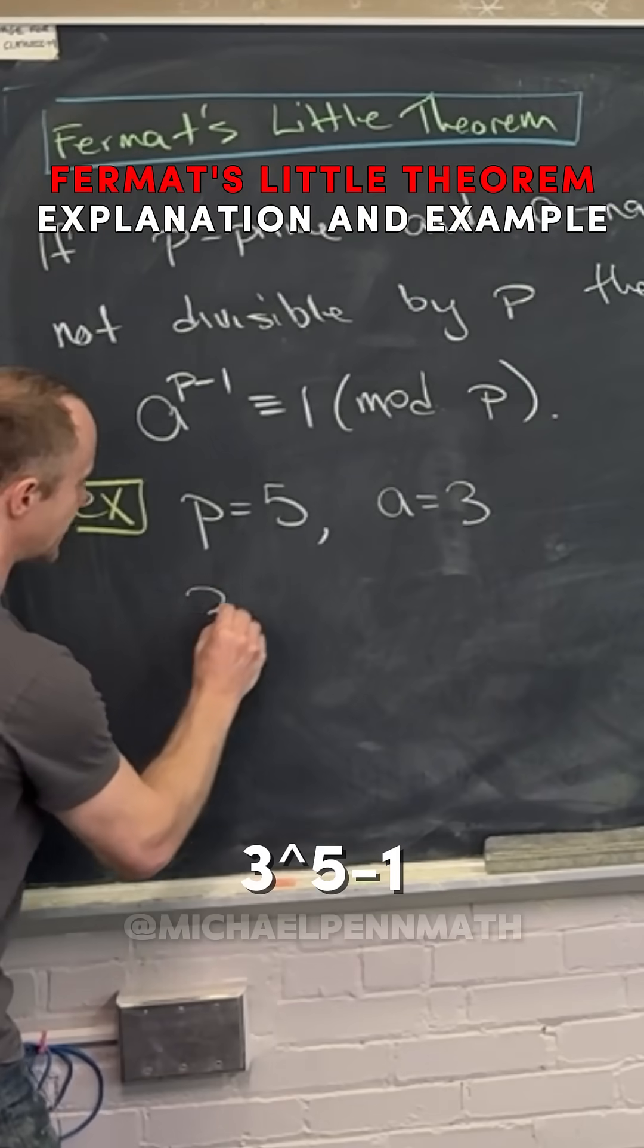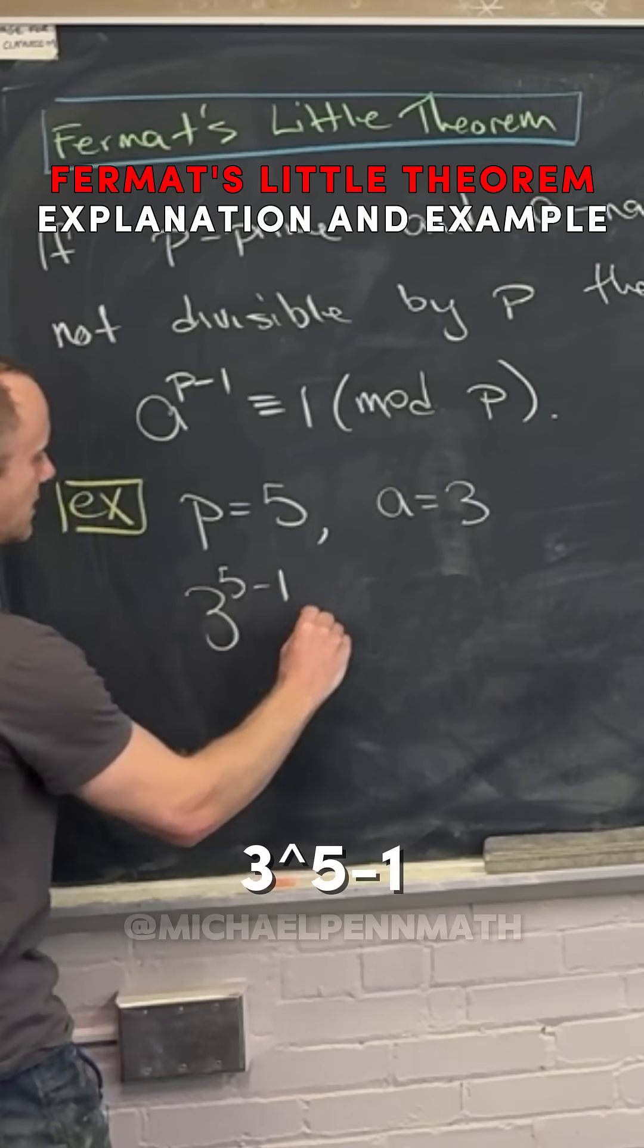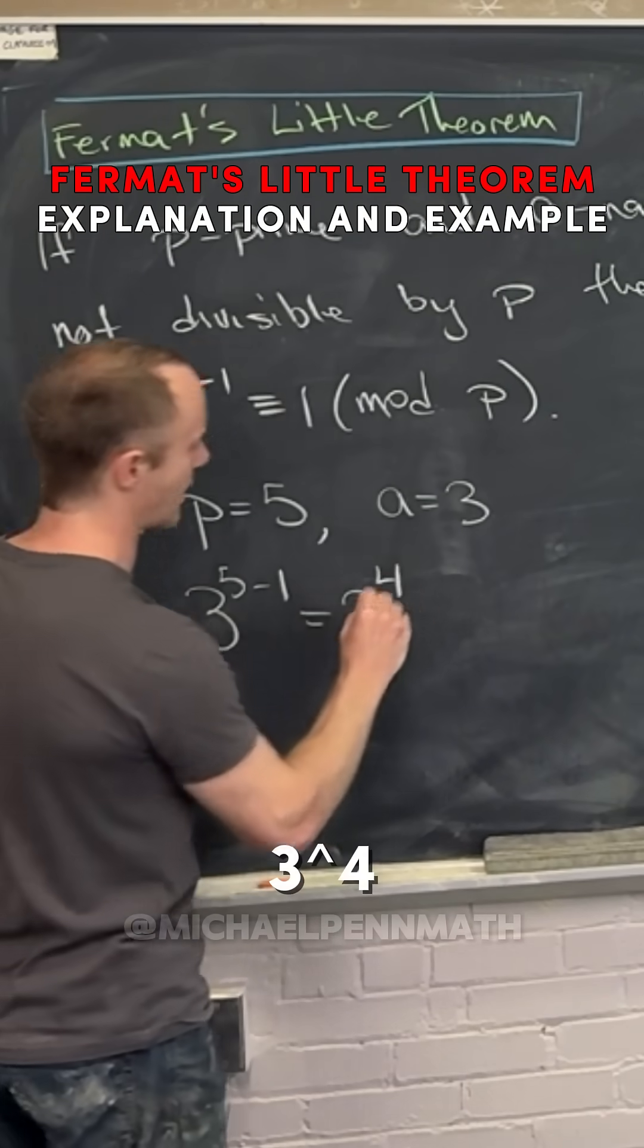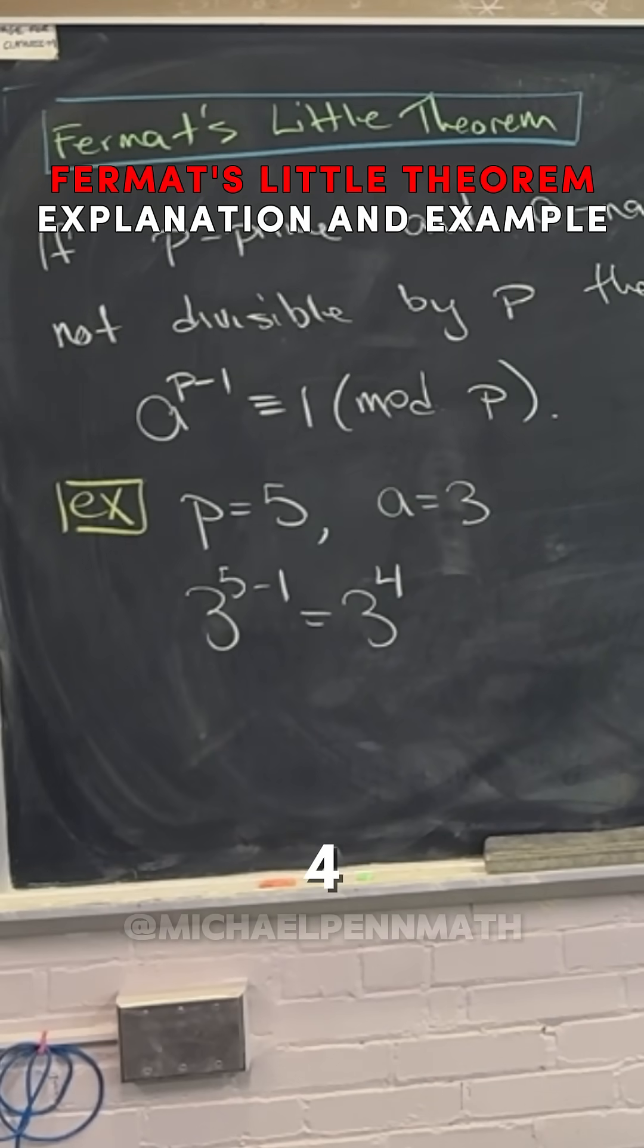Now let's look at 3^(5-1), which is the same as 3^4. That's actually not so hard to calculate because it's 3 squared, squared. 3 squared is 9, and then 9 times 9 is 81.